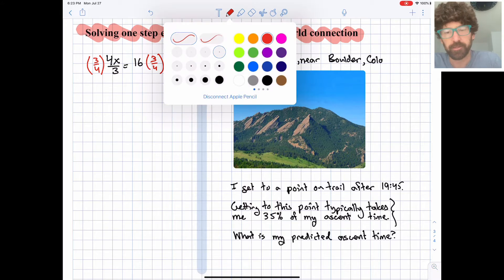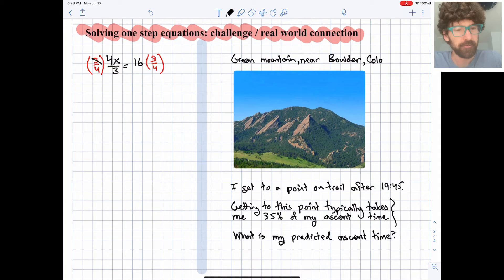And so what that will do, these 3s will cancel, these 4s will cancel, and we are left with just an x on the left side. And then we need to think about what 16 times 3 fourths is. That's something that you can do in your head with a little mental math. What's 1 fourth of 16 is 4, so 3 fourths of 16 is going to be 12.